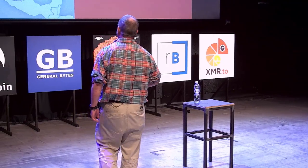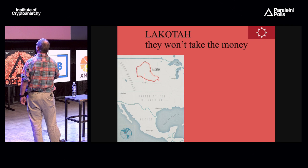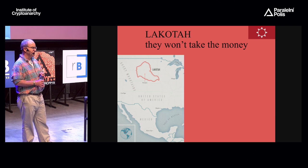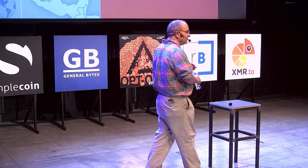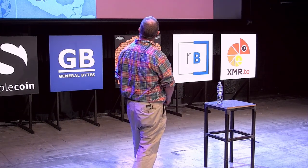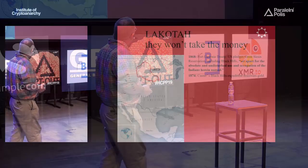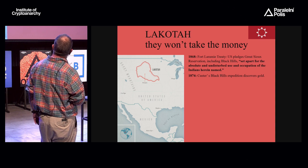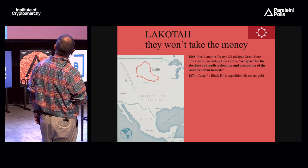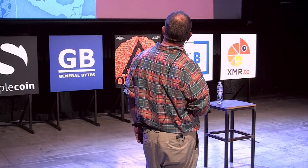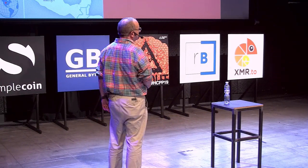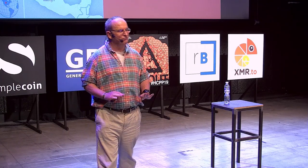Now for a much sadder example: Lakota, a great big area of territory slap bang in the northern centre of the United States of America — the homeland of the Lakota Sioux. The Lakota Sioux had a treaty with the US government in 1868 stating quite categorically that this land had been set apart for 'the absolute and undisturbed use and occupation of the Indians herein named' — the Lakota Sioux. Unfortunately for them, just a few years later gold was discovered in the Black Hills. So, all bets are off.